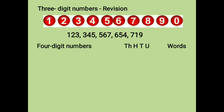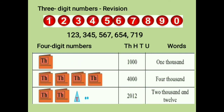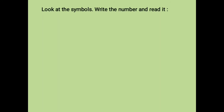Now let us look at four-digit numbers. Let us read in figures as well as in words. The first one is 1000, the second one is 4000, and the third one is 2012. Now look at the symbols, write the number and read it.